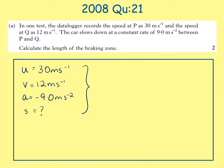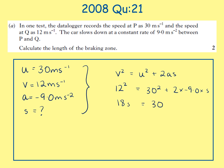Using v² = u² + 2as: 12² = 30² + 2 × (−9) × s. Rearranging gives 18s = 30² − 12², giving a final answer of s = 42 metres.